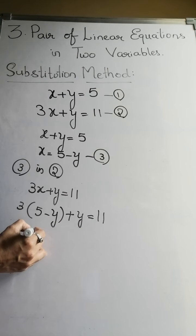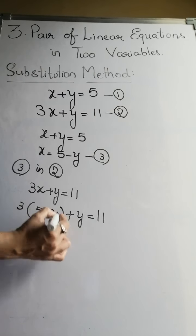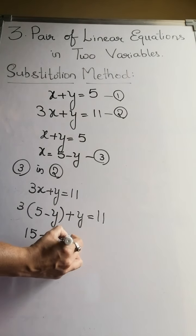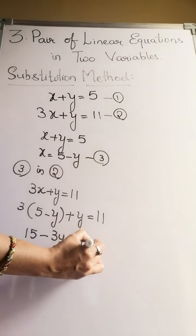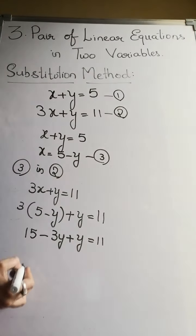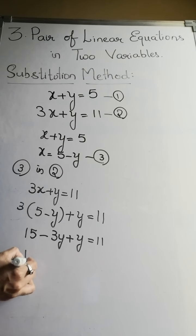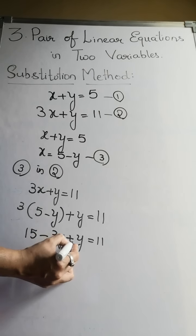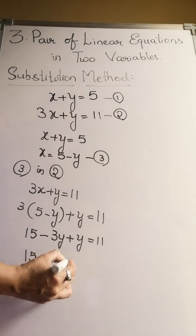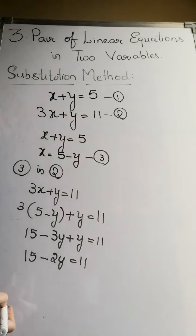Now 5 into 3 is 15 minus 3 into y is 3y plus y equals 11. 15, minus 3y plus y is minus 2y equals 11.